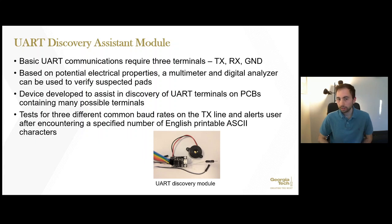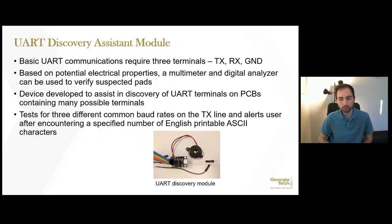Basic UART communications requires three terminals: transmit, receive, and ground. There are often two to four electrical pads in a row; the third and fourth are sometimes ground and VCC. The communication operates in a range of voltages from +1.8 to +5 volts, and a multimeter and digital analyzer can be used to verify suspected pads. The researchers also discussed their development of a UART discovery module to aid in discovering UART terminals on the PCB. It tested for three different common baud rates on the transmit line and alerted the user with an audible sound after encountering a specified number of English printable ASCII characters in the range of hex 20 to 7F.